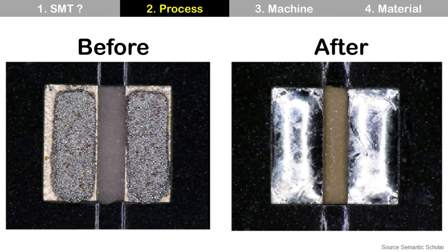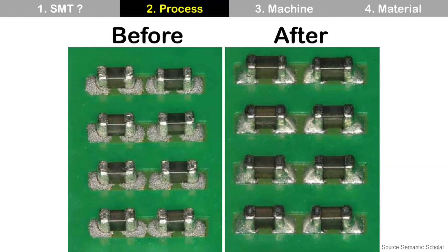This is a simple demonstration of how solder paste looks before and after the reflow process. Before reflow, solder paste is a mixture of solder powder and flux, but after reflow it becomes solid solder. This solid solder is the connecting material between the SMD and the package substrate. Passive components before and after reflow look like this.